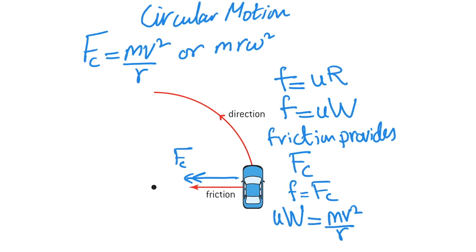I'm hoping that right now you have a question in your mind — and the question I'm hoping for is: what happens if there is no friction? What happens if this particular force of friction is less? For example, there's rain on the road — then what happens? Well, you know exactly what happens: your particular car starts to skid outwards. This car does not remain in its circle; it starts skidding in the outward direction.